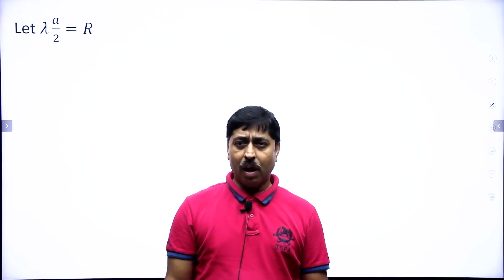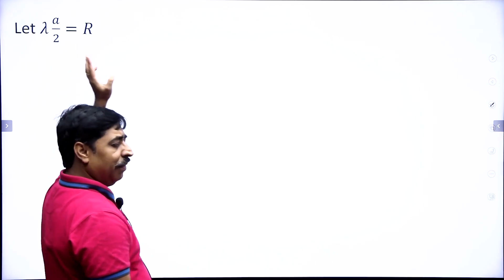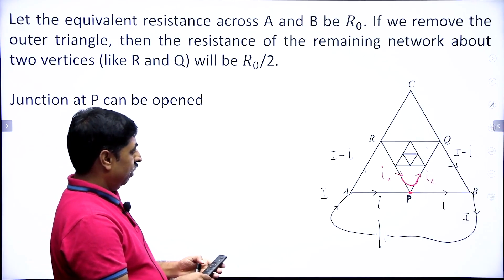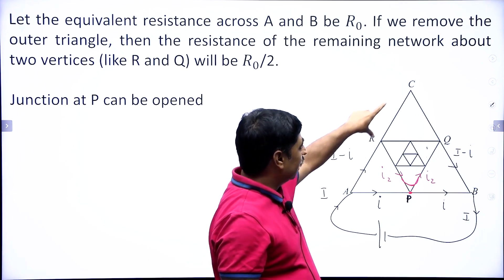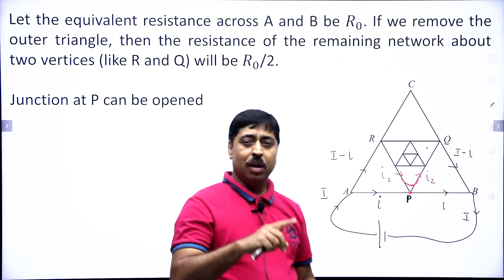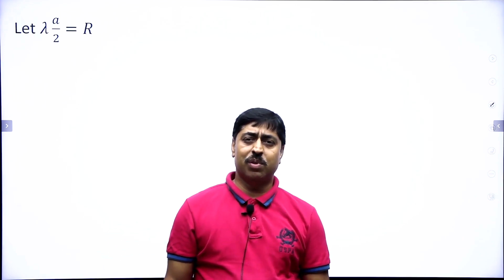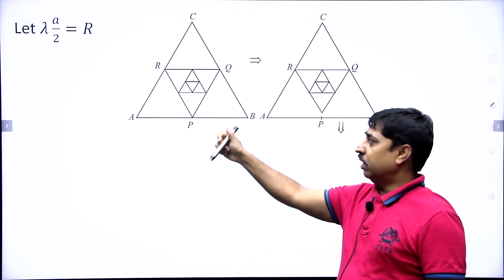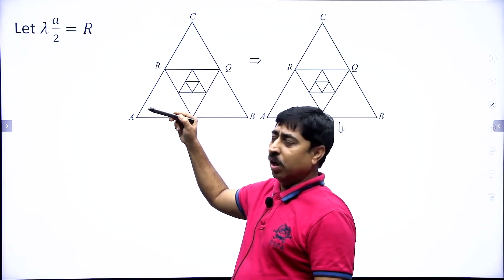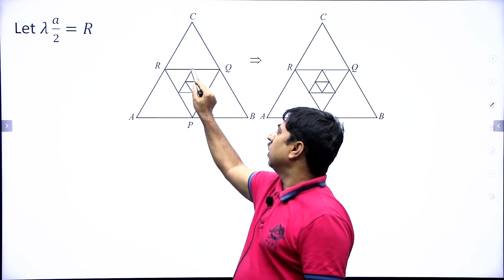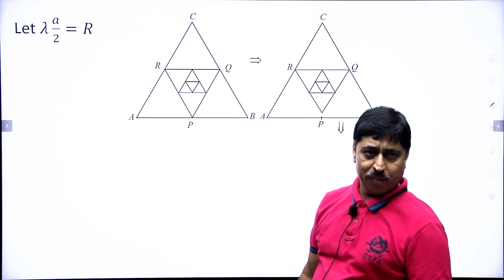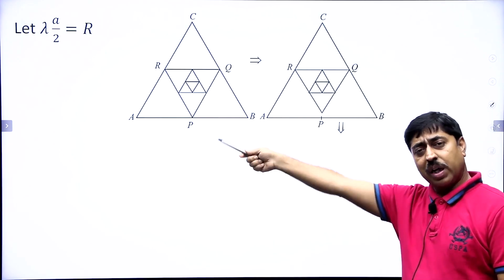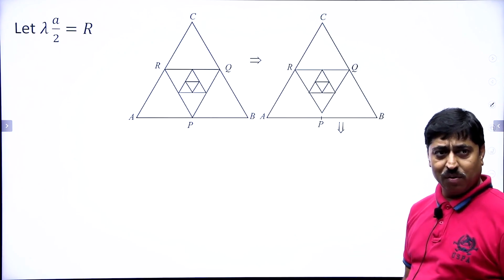Now let us solve this problem. Lambda is the resistance per meter length. If the side length is A/2, the resistance of that side is λ × A/2, which I will call R. So R = λA/2. In the given circuit the three sides of the outer triangle each have resistance R. The sides of the next inner triangle each have resistance R/2, then R/4, and so on. The first thing I do is open the junction at point P, since it makes no difference to the circuit.